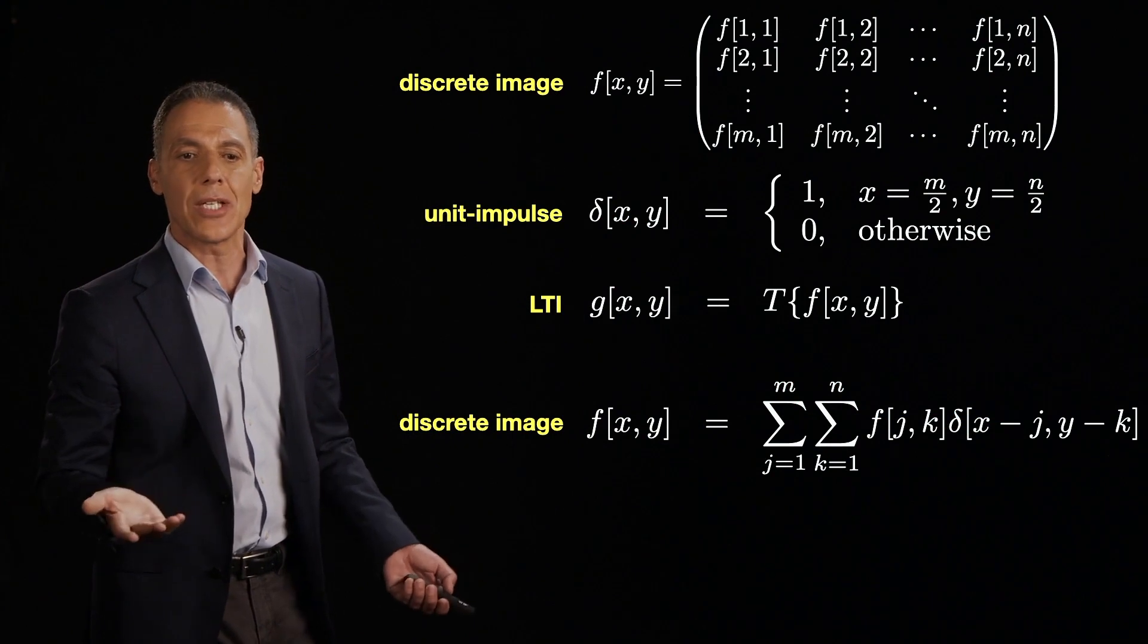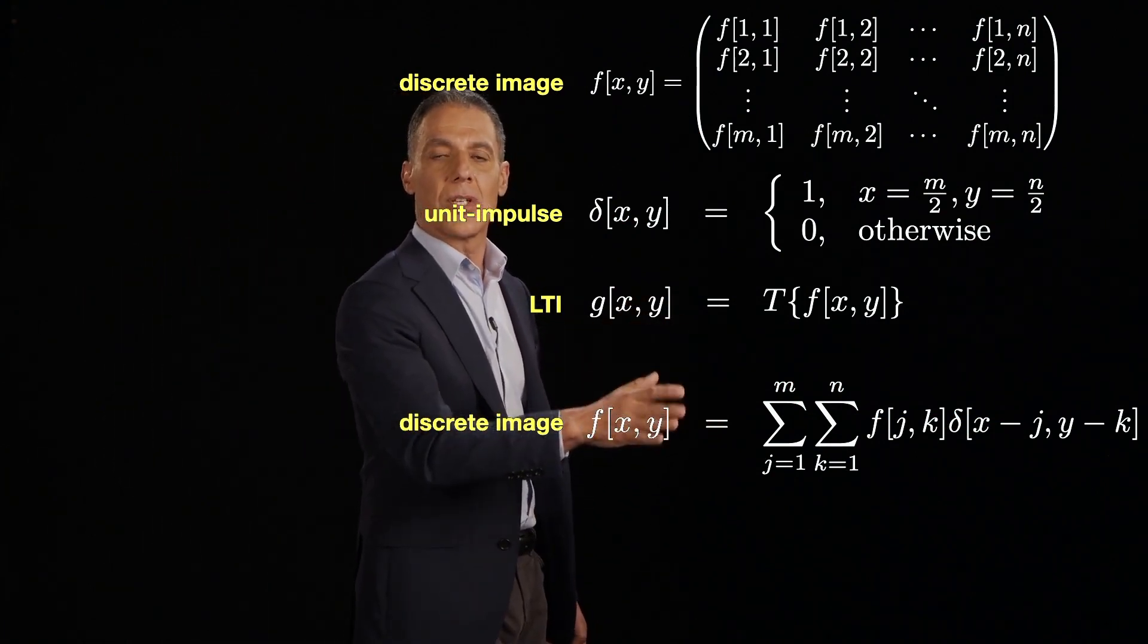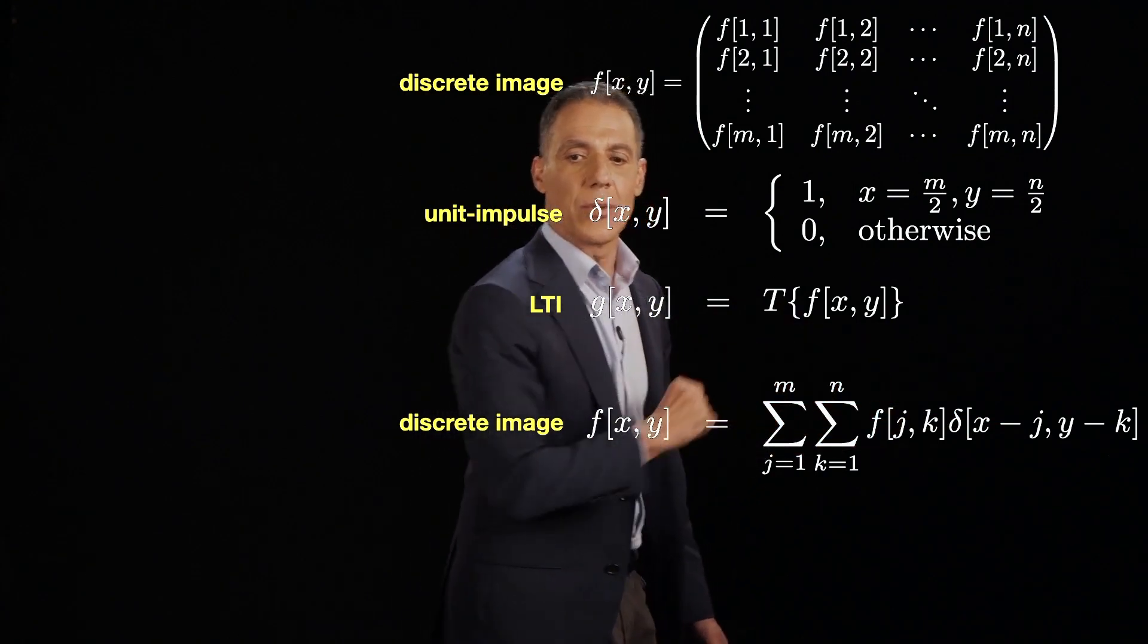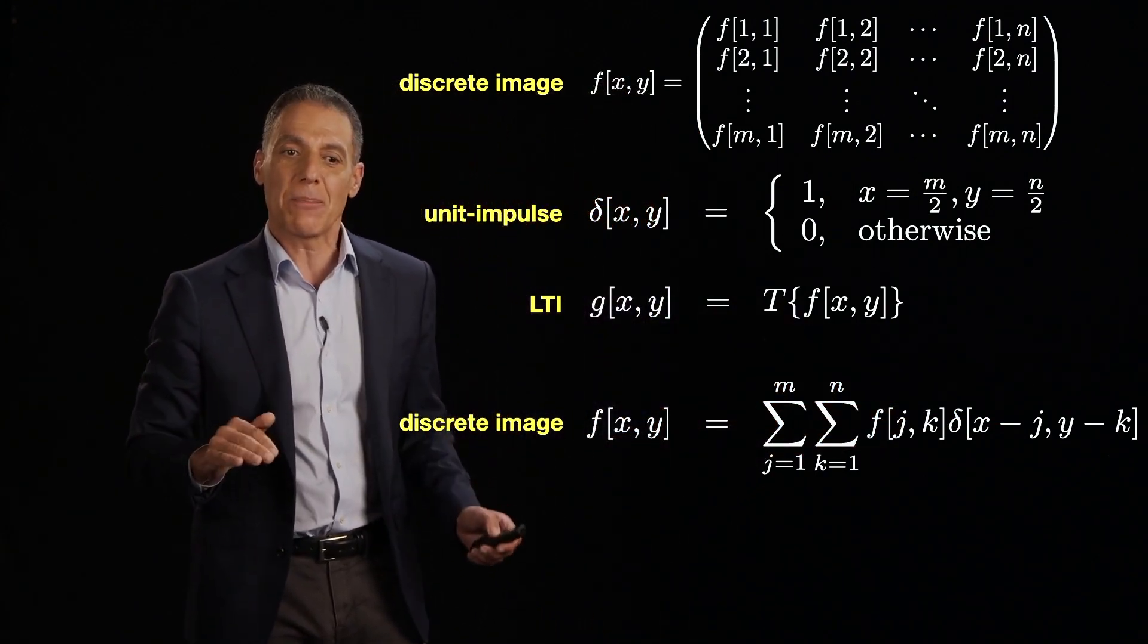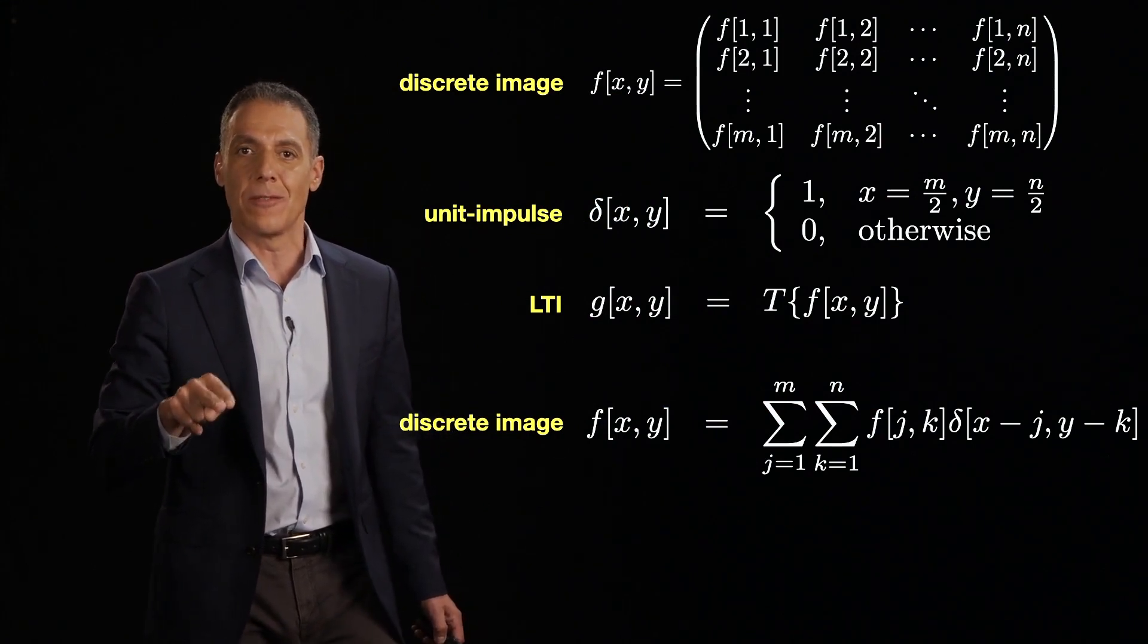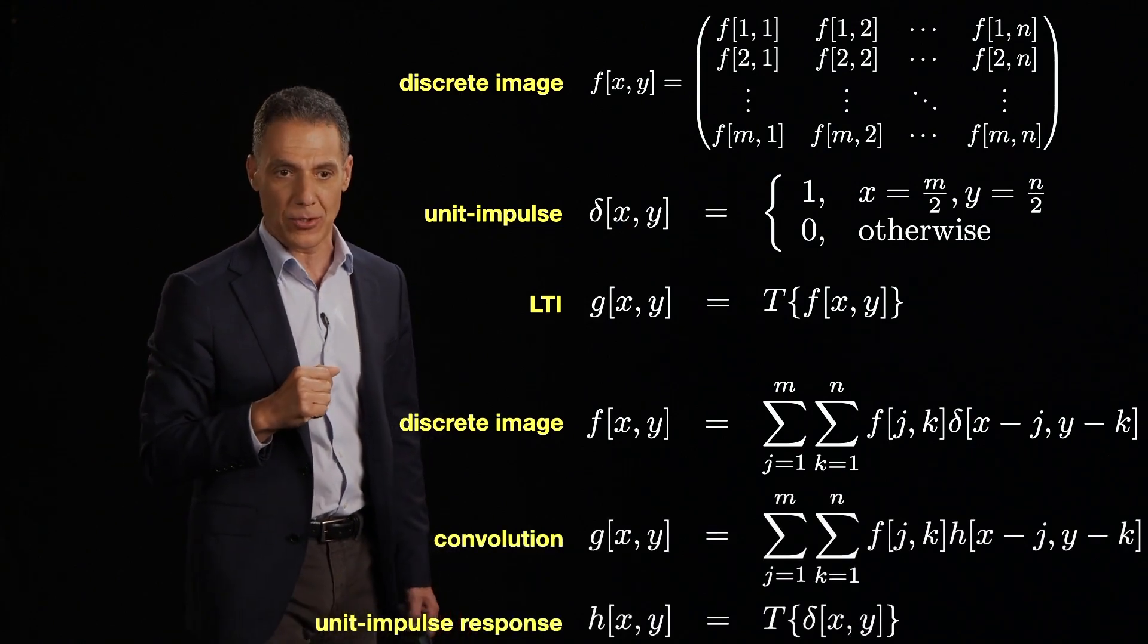So this is just a 2D convolution where now I'm representing my image as sums of scaled unit impulses. Again, seems like a trivial thing to do, except when we put that representation into that LTI, we're of course again going to get our convolution sum.